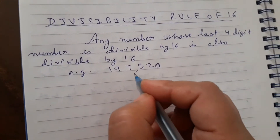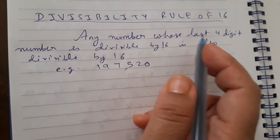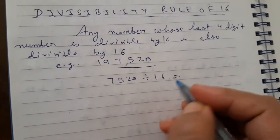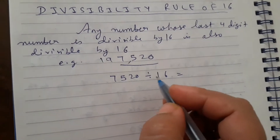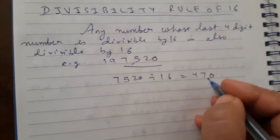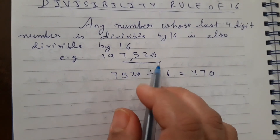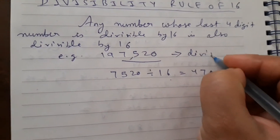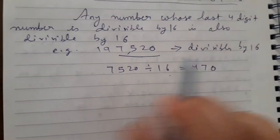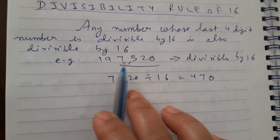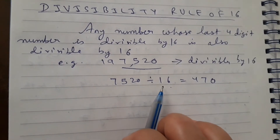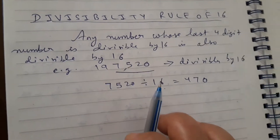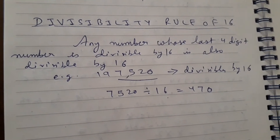Let's take an example. You have to check if this number is divisible by 16 or not. The rule is: take the last 4 digits and divide by 16. When you divide 7520 by 16, it comes to 470, so 7520 is divisible by 16. That's why this whole number is divisible by 16. For any number with more than 4 digits — 5, 6 digits — you only check the last 4 digits for divisibility by 16.